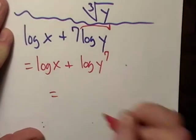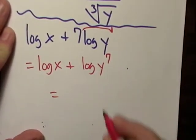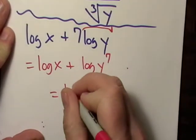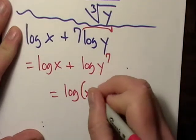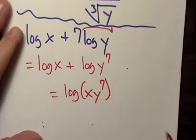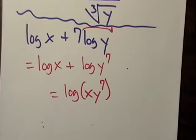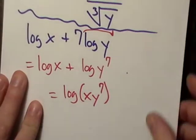Let's see here. Then next, it's a sum, so if we want to combine it into a single logarithm, we're going to end up with this. Not too bad.